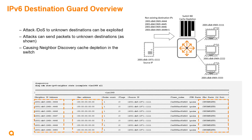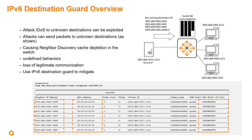It can quickly fill up with IP addresses in a v6 environment because there are vast amounts. This cache depletion is a negative effect on the switch. It can cause undefined behaviours and loss of legitimate communication. So we can use IPv6 Destination Guard to mitigate such attacks.